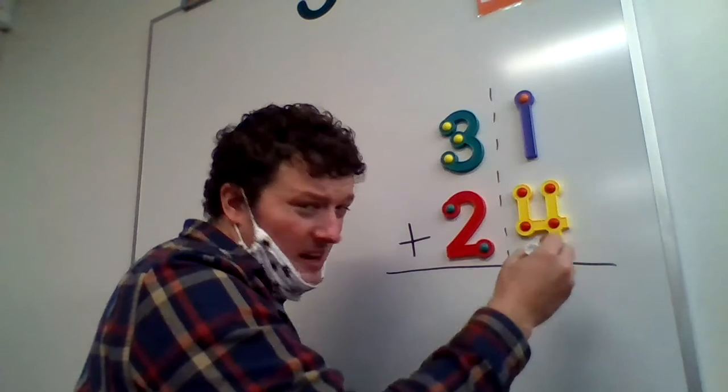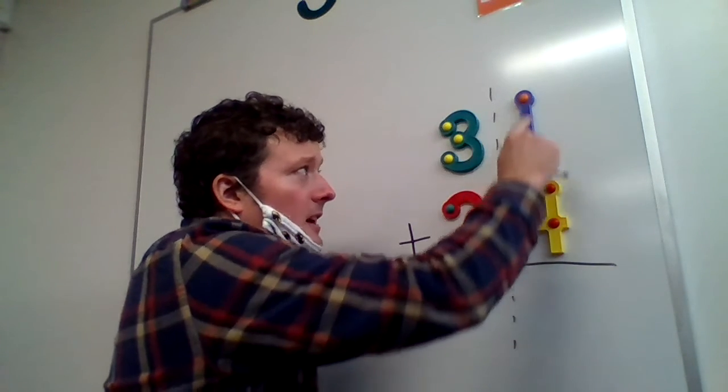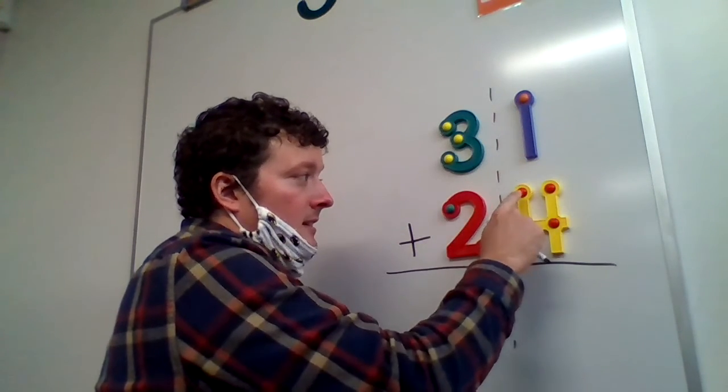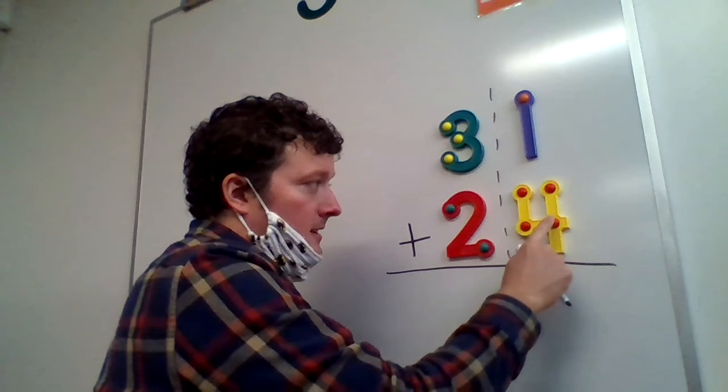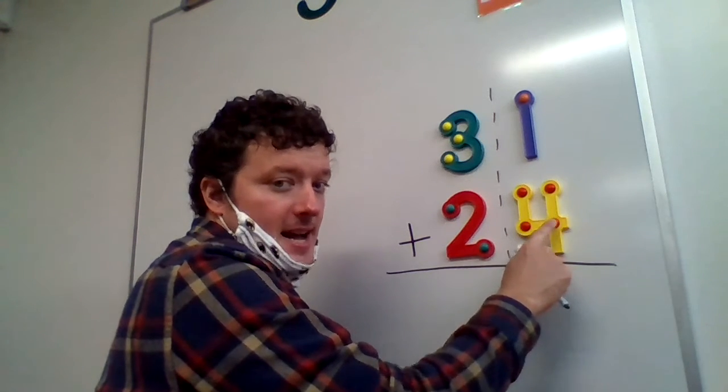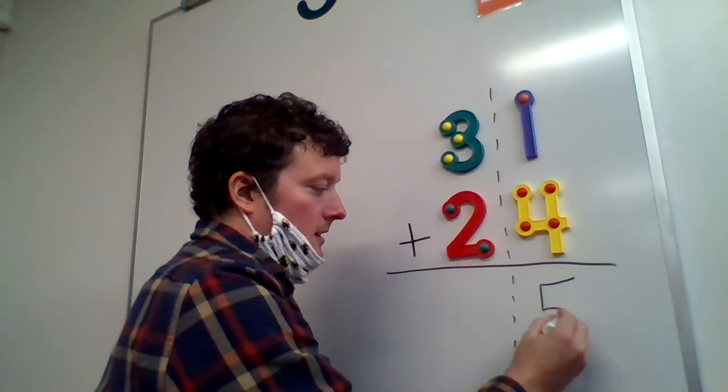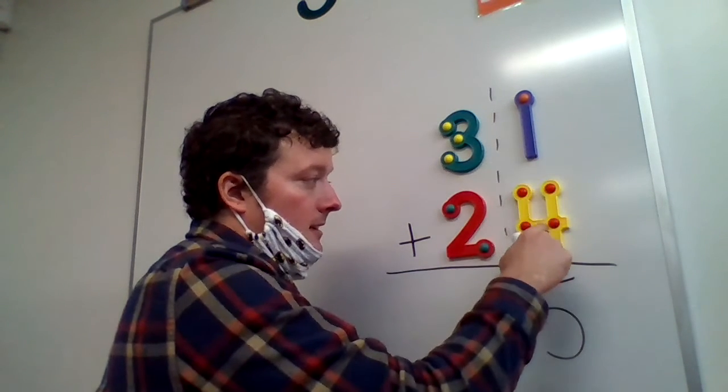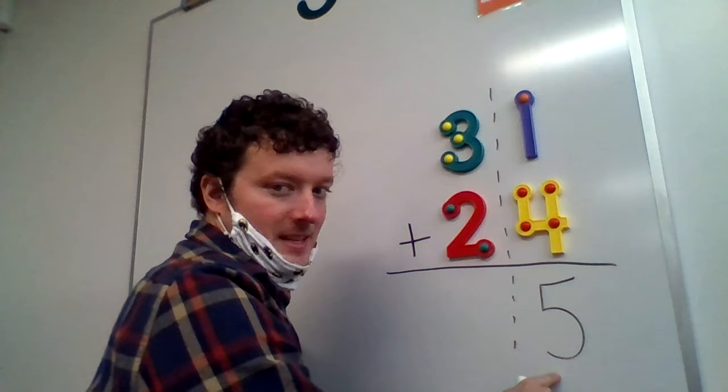Now, and we add just straight down. So count the dots with me. So we have one, two, three, four, five. We hit five touch points. So one plus four is five.